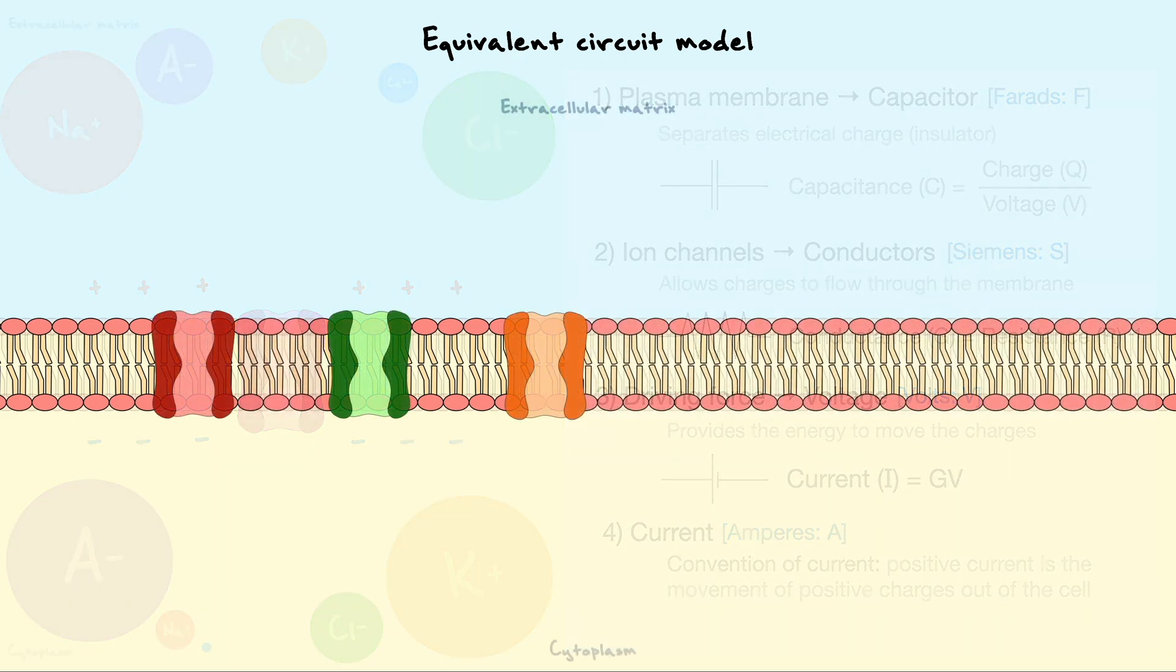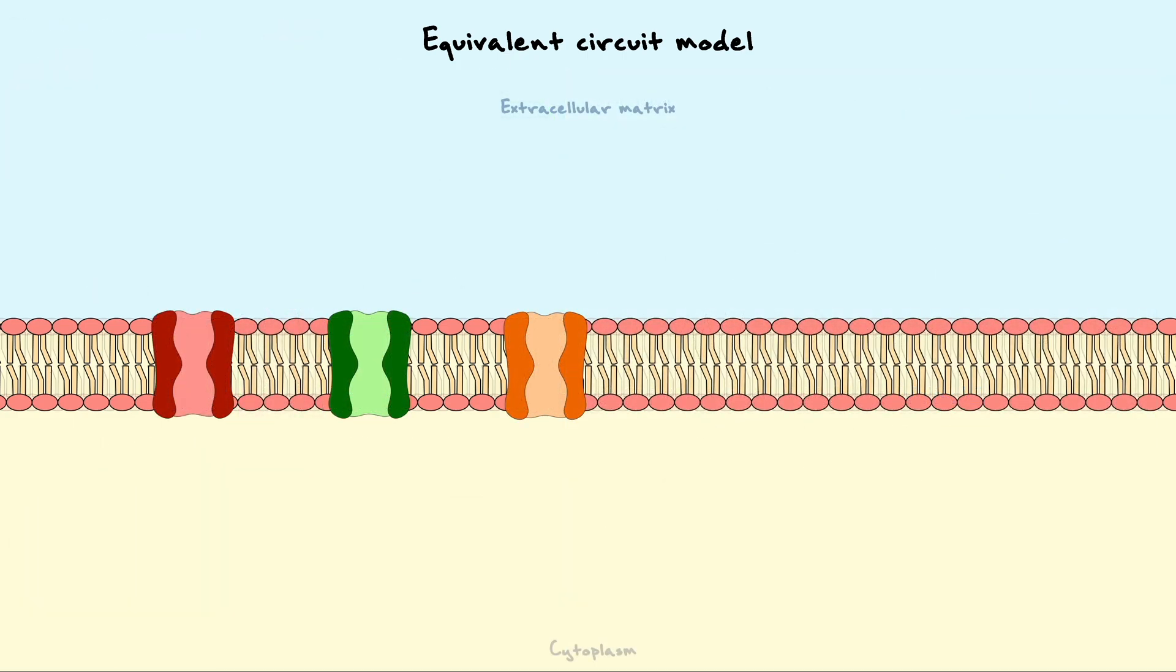Now, let's build an electric circuit that represents the neuron. As we've seen, the important ions that contribute to the resting membrane potential are potassium, sodium and chloride. Also, we have seen that their channels all have different selectivities and permeabilities. Thus, we must consider each type of channel as separate conductors.